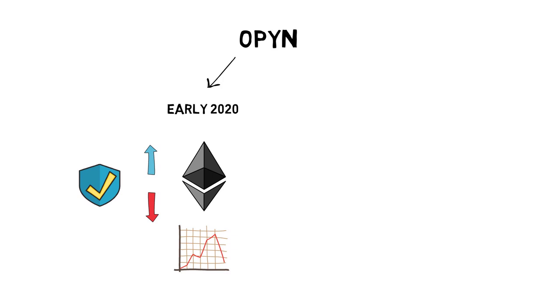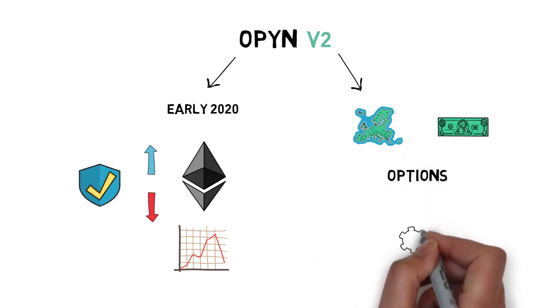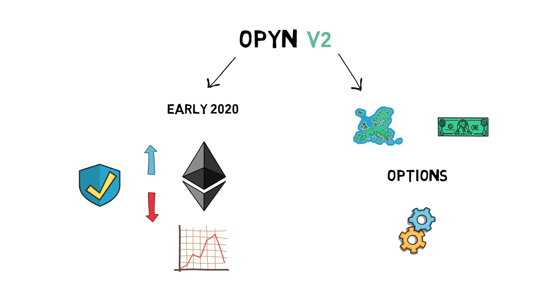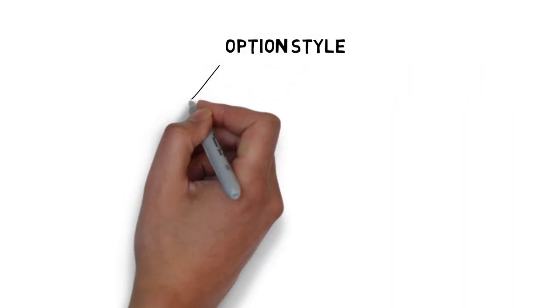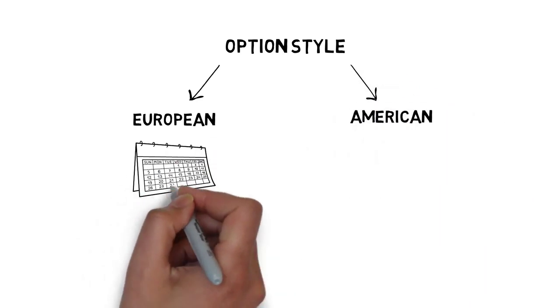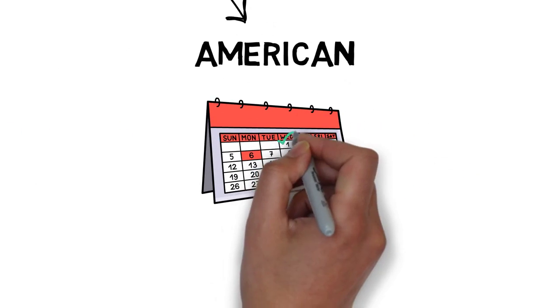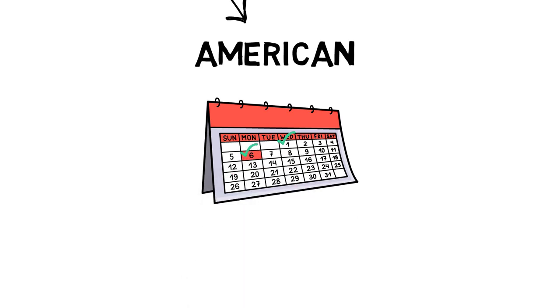They've recently launched a V2 of the protocol that offers European cash settled options that auto-exercise upon expiry. There are two main option styles, European and American. European options can only be exercised at the time of expiration, whereas American options can be exercised at any time up to the expiration date.